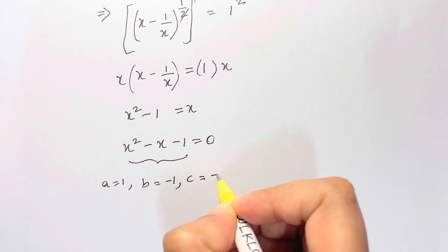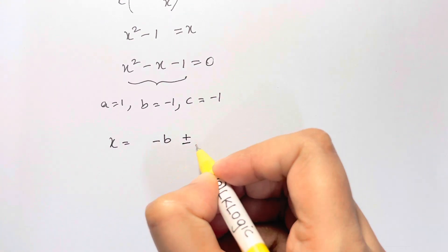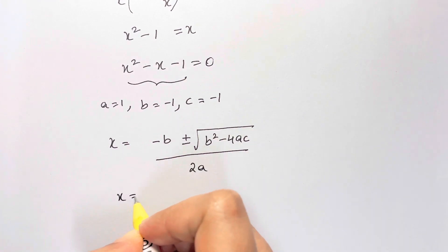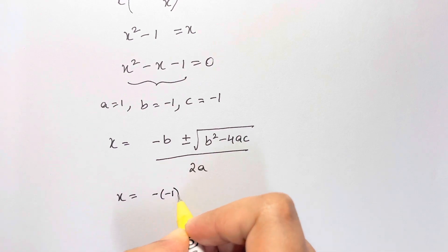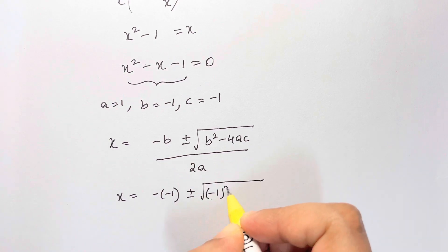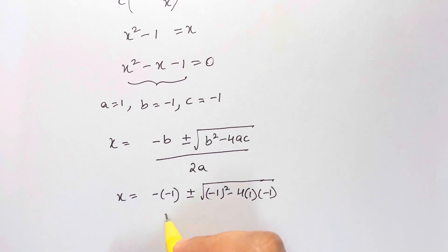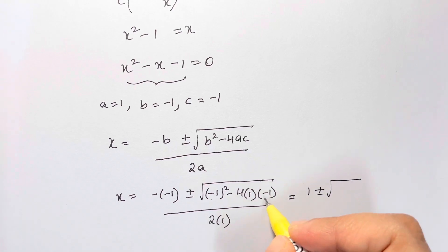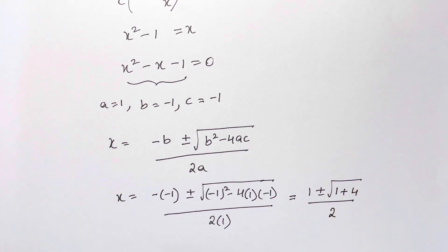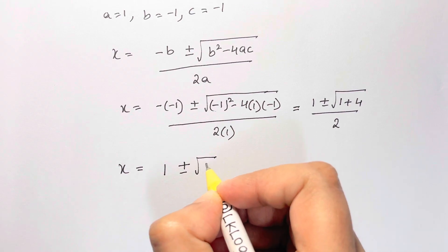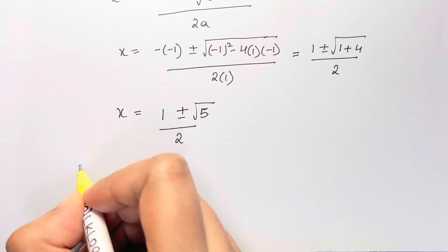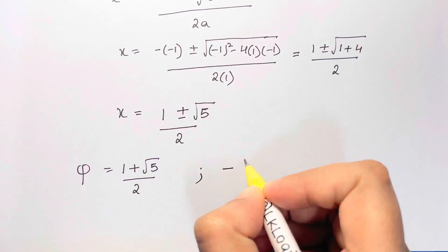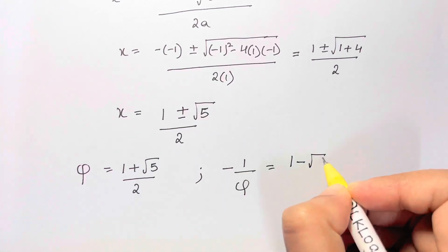Using the quadratic formula with a equals 1, b equals negative 1, c equals negative 1: x equals (negative b plus or minus square root of b squared minus 4ac) over 2a. Substituting: (1 plus or minus square root of 1 plus 4) over 2, which gives 1 plus or minus square root of 5, all over 2. So we have the golden ratio (1 plus root 5)/2 and its negative reciprocal (1 minus root 5)/2.